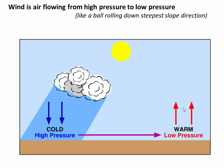Air pressure generates wind. Air can behave like a liquid and flow. If you're sitting under a column of cold high-pressure air, you're basically being squeezed like toothpaste out of a tube and want to escape toward areas of lower pressure warm air. Pressure is always trying to balance out on the surface of the earth, which means air is always trying to flow out from under high-pressure cold air towards lower-pressure warm air.